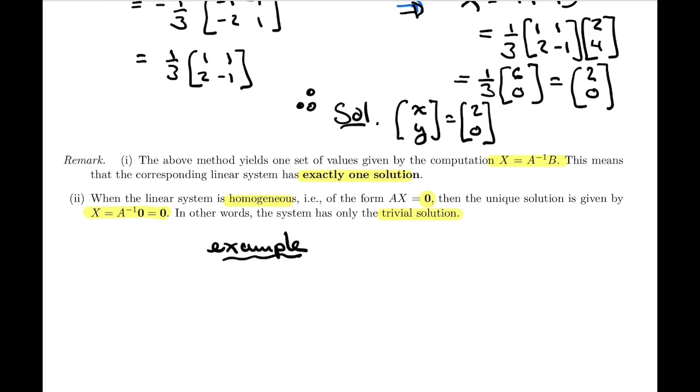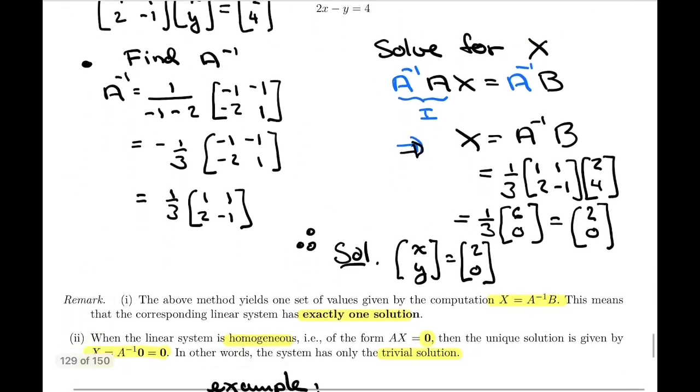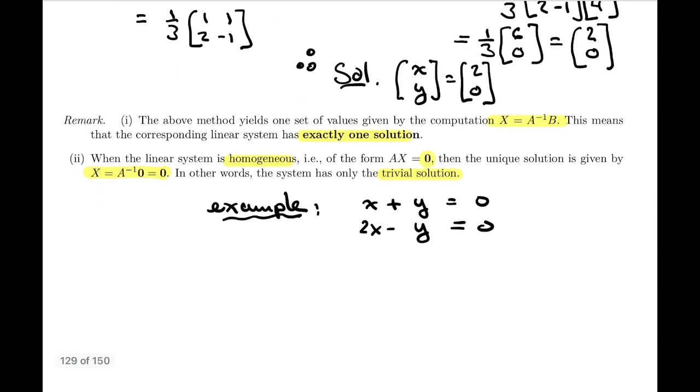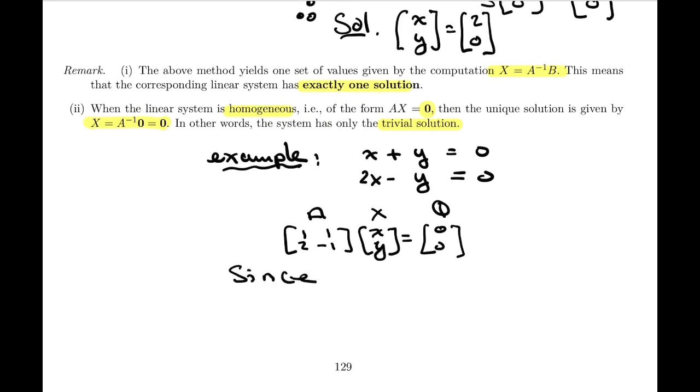For example, if we rewrite the above system as a homogeneous system, the matrix was [1, 1; 2, -1]. So if I have x plus y equals 0 and 2x minus y equals 0, this gives the matrix equation [1, 1; 2, -1] times [x; y] equals [0; 0], the zero matrix. We know that since A is invertible, since A inverse exists, which is the same thing, then the unique solution will be [x; y] equals [0; 0]. In other words, only the trivial solution, because when we isolate x, we're multiplying A inverse times zero and obtaining the zero matrix.